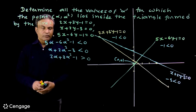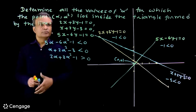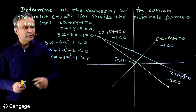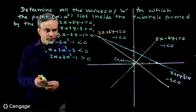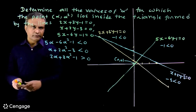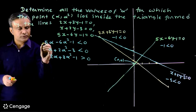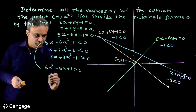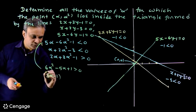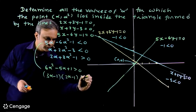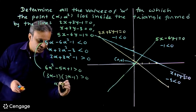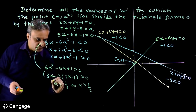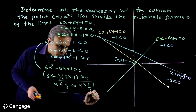We have three conditions. When we impose all three conditions simultaneously, the point will lie inside the triangle. Let us solve the inequalities one by one. Solving the first one: 6α² minus 5α plus 1 greater than 0 factors as (3α minus 1)(2α minus 1) greater than 0, giving α less than 1/3 or α greater than 1/2.